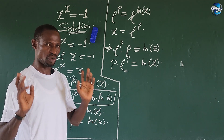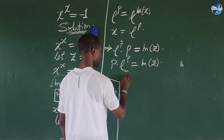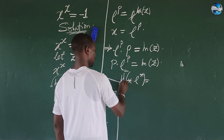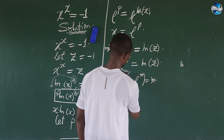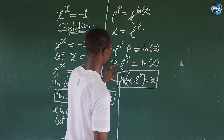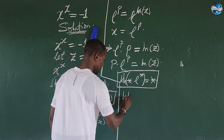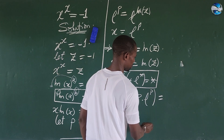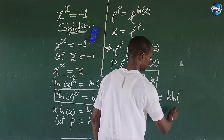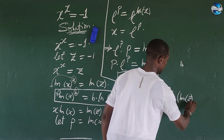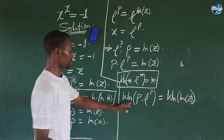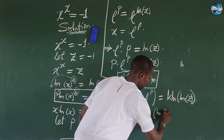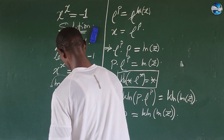Looking at the expression p times e to the power of p, this brings to mind the Lambert W function, which says that if you have a star times e to the power of a star, then taking the W function of that gives us a star. We can apply that here because what we have at the base is the same thing we have at the exponent. So taking the W function of both sides, we get p equals W of ln of z.